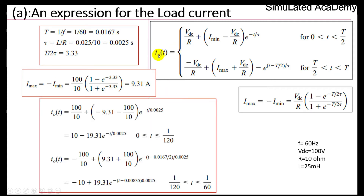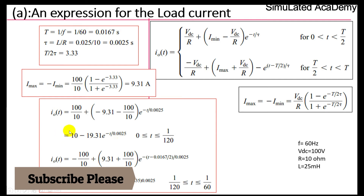Now let's calculate the general expression for the load current in the first interval. For 0 to T/2 (i.e., 0 to 1/120 s): i(t) = VDC/R + (I_min − VDC/R) · e^(−t/τ) = 100/10 + (−9.31 − 100/10) · e^(−t/0.0025) = 10 − 19.31 · e^(−t/0.0025) amperes. This is the instantaneous equation for the load current in the first half cycle.